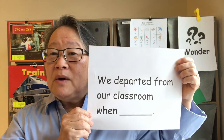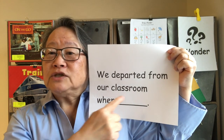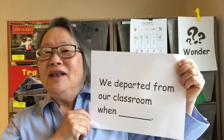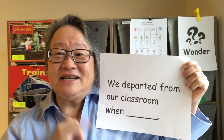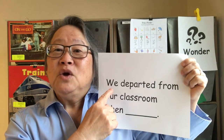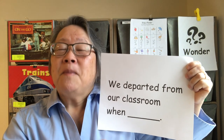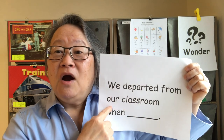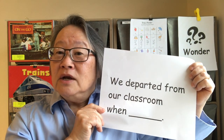When we share our ideas about when we departed from our classroom, let's use this sentence stem: 'We departed from our classroom when...' and give the reason why or where you departed to. A lot of people said we departed from our classroom when we went to recess. Another thing I heard was we departed from our classroom when it was lunchtime to go to the lunchroom. So many people said we departed from our classroom when it was time to go home. Those are great ways to use the word departed.